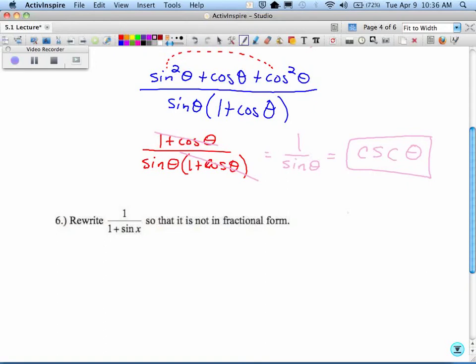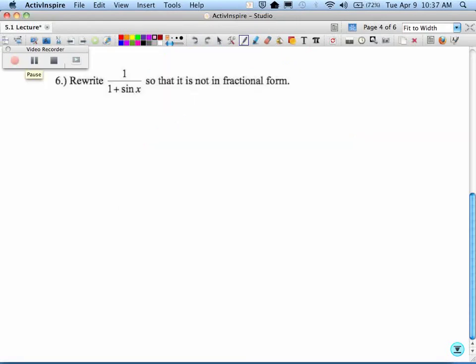All it tells us, rewrite it so it's not a fractional form, but it really needs to simplify again. Now, one of the tricks, you know, you're looking at this, you're going, there isn't a Pythagorean identity to simplify. There isn't. I can't do any of the factoring tricks that we've already done. I don't have another term to do a common denominator.